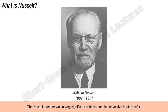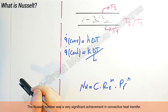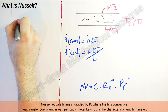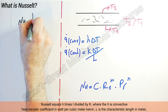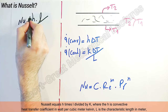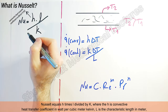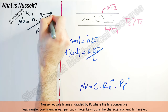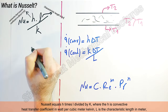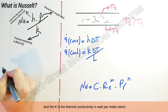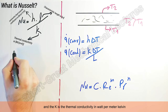The Nusselt number was a very significant achievement in convective heat transfer. Nusselt equals h times L divided by k, where h is the convective heat transfer coefficient in watts per meter squared kelvin, L is the characteristic length in meters, and k is the thermal conductivity in watts per meter kelvin.